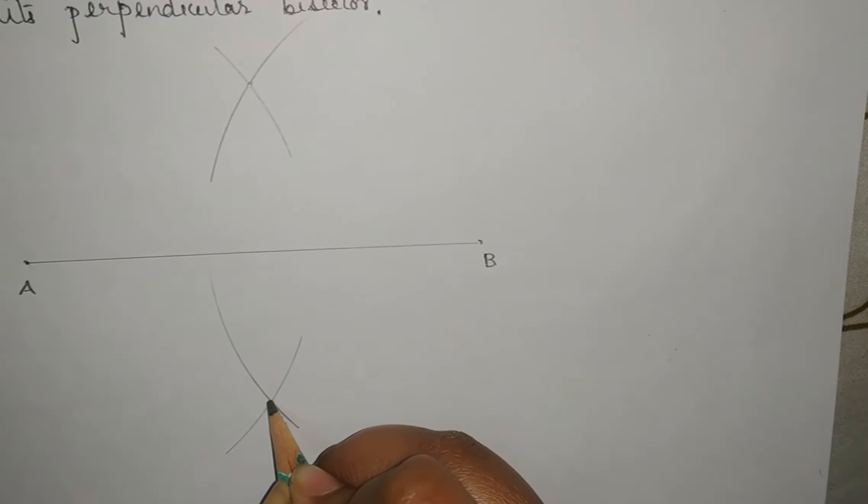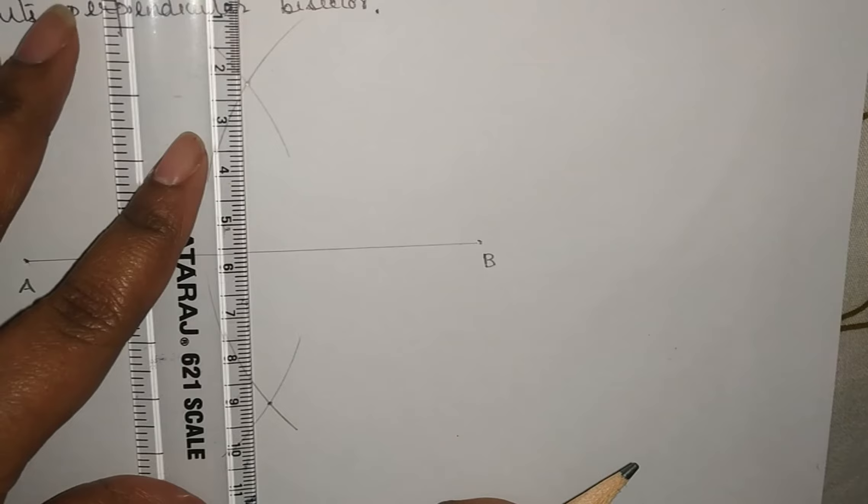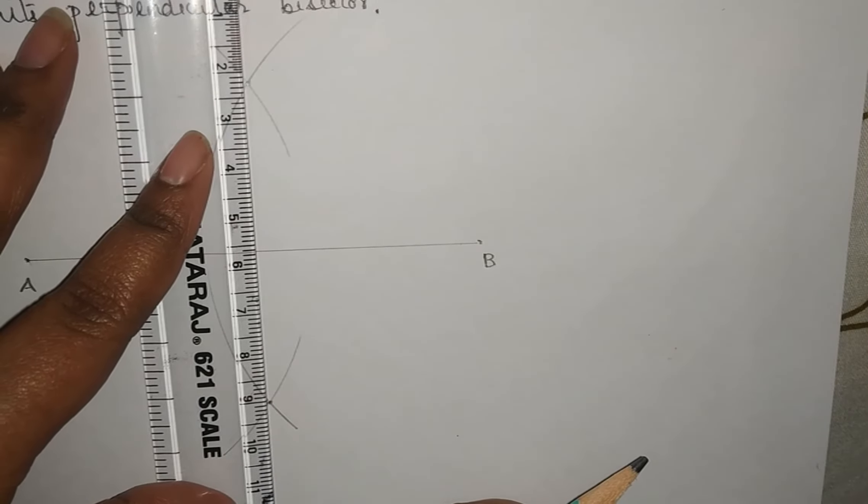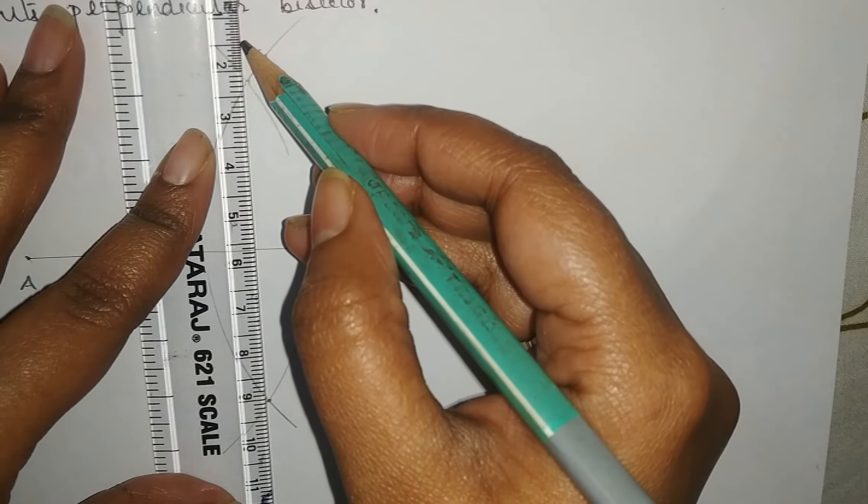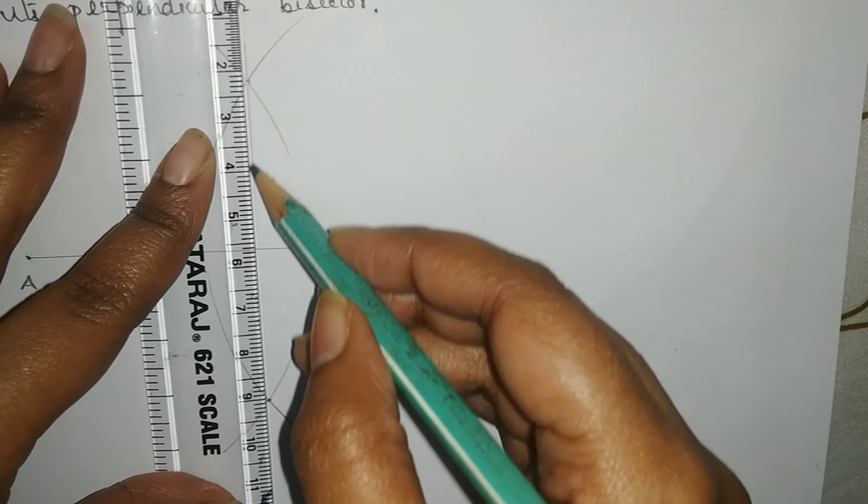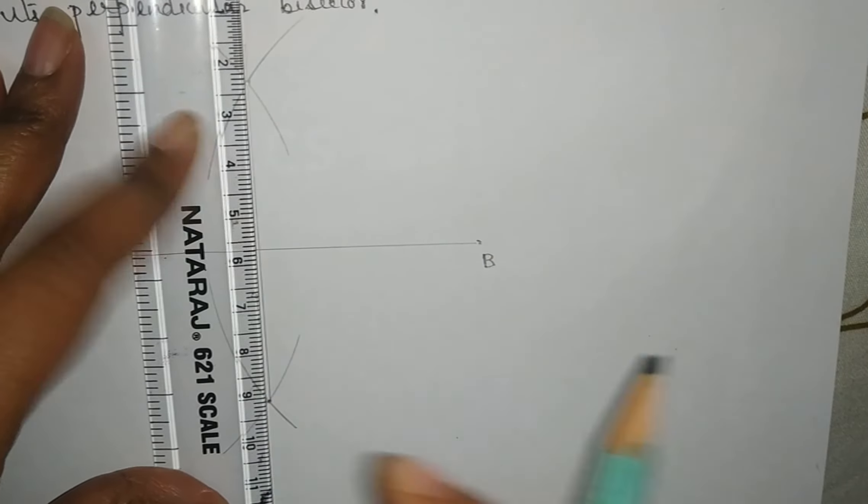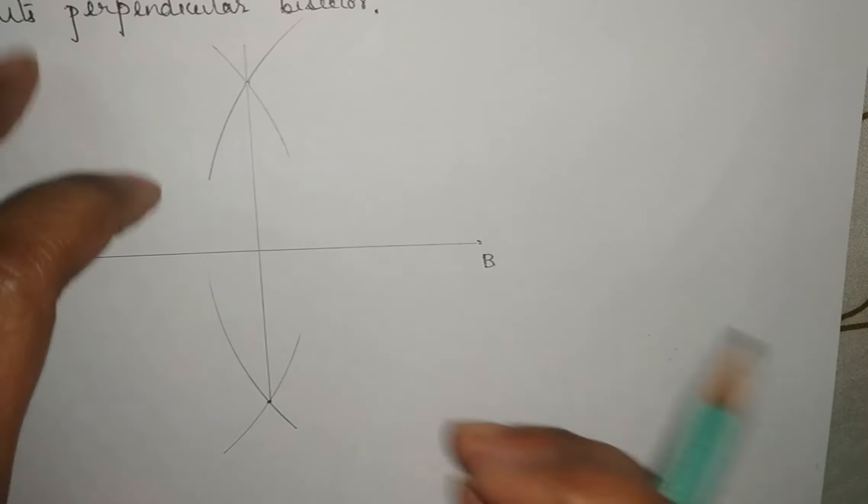Now we will join these two points to get the perpendicular bisector. Perpendicular bisector means which makes 90 degree with the baseline and divides the line segment into two equal halves.